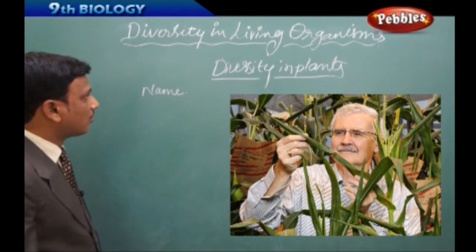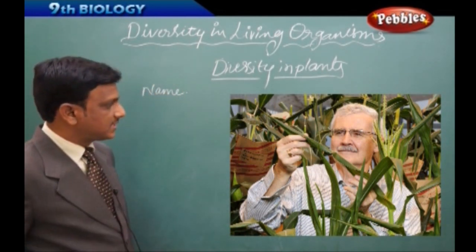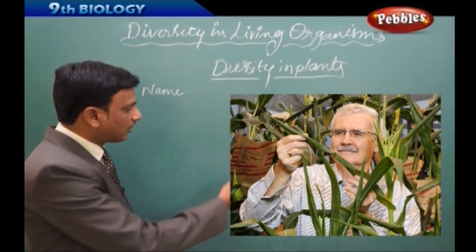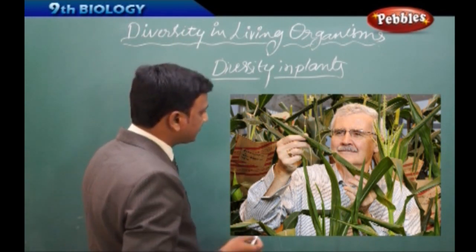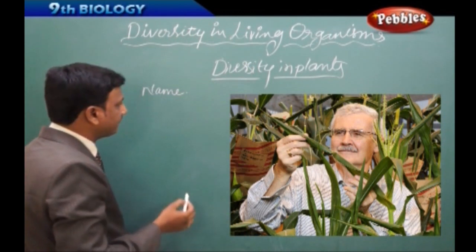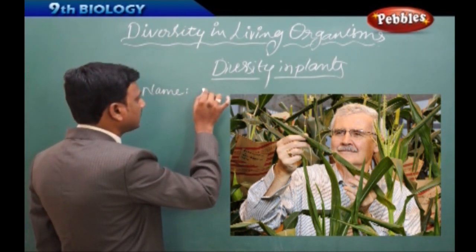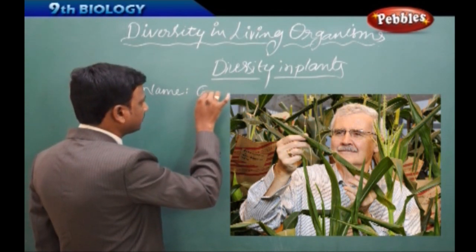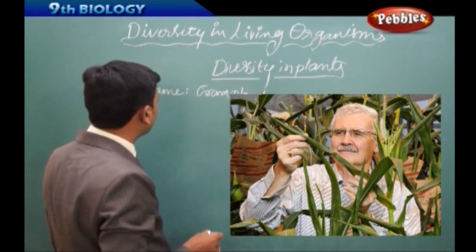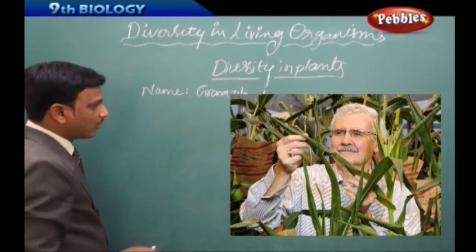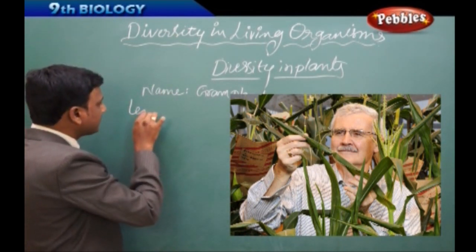In this diversity of plants activity, we have a plant and we will see how to study the features of the leaves. Here we have a bengal gram plant — a sapling of a bengal gram plant. We write the name of the plant first, then observe the leaf. How is the leaf? What is the length of the leaf?